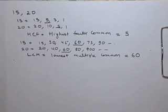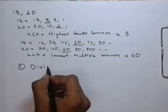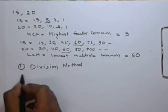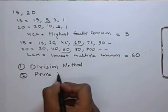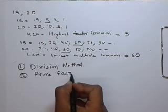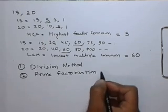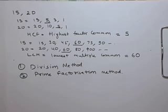Now, we will move towards the methods to find out GCF and LCM. There are two methods: one is the division method, and the other is the prime factorization method. There is no need to memorize these two methods; the basic understanding of the procedure is required to solve the problems.